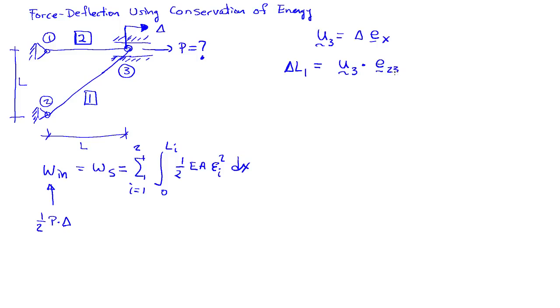Because of the lengths given, this is going to be delta over the square root of 2. The change of length of bar 2 is going to be equal to u3 dotted with the unit vector that runs from node 1 to node 3, which is simply delta in this case.